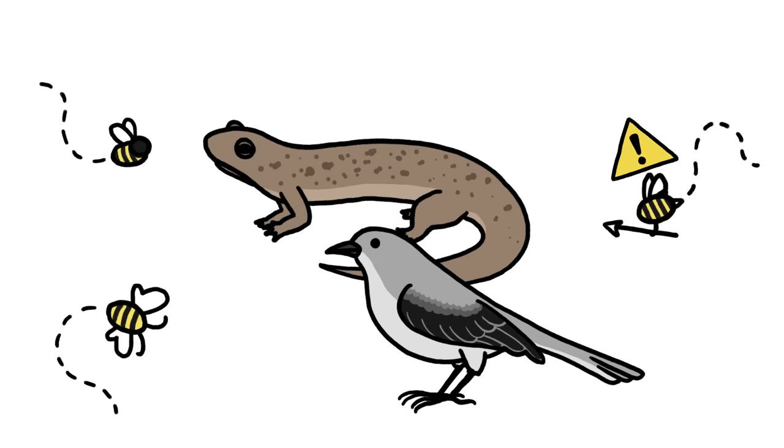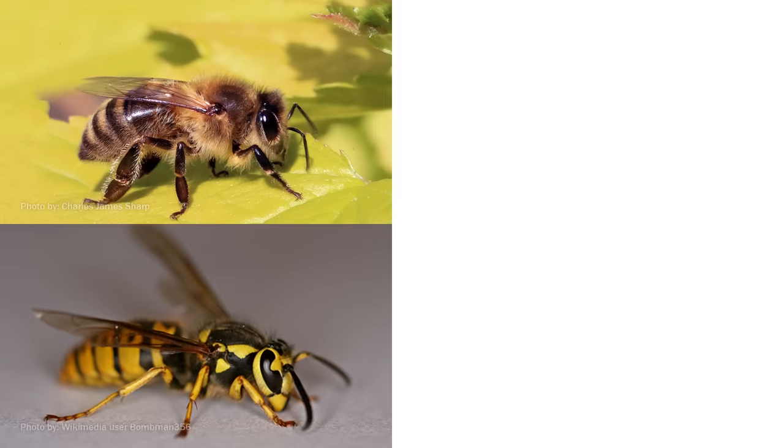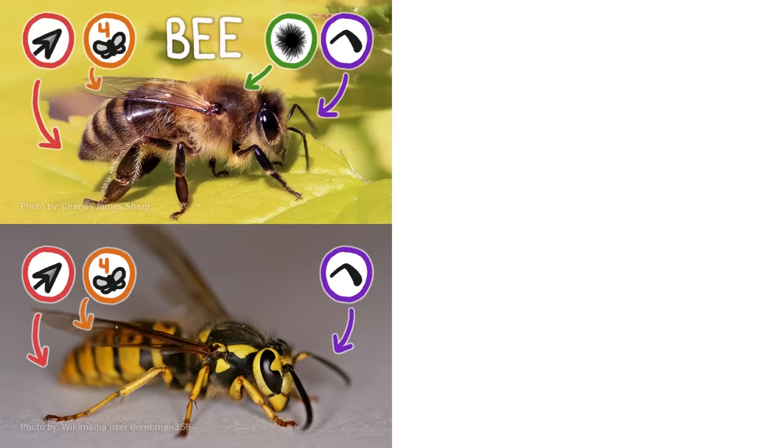Neither flies nor moths have stingers for defense, but simply looking like an insect that does provides pretty much the same protection. So is that insect a bee, or not a bee? If it just stung you, it's a bee or a wasp. Along with stingers, both have short elbow-shaped antennae and four wings, although those can be hard to see. Bees are the super hairy ones, while wasps are mostly bald.